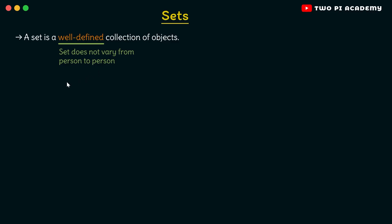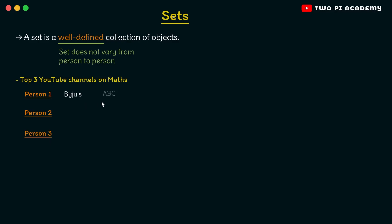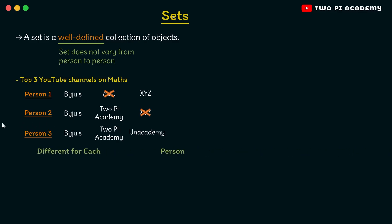Let's understand this with an example. Consider the top 3 YouTube channels for maths. If you ask three different persons, the first person will say Yju's channel is good and then there is some ABC, XYZ. The second person will say instead of ABC, you can use 2Pi Academy. And the third person will say instead of XYZ, maybe Anacademy. Every person will name 3 different channels as the best. Therefore, it will be different for each person, which means it is not well-defined and hence not a set.